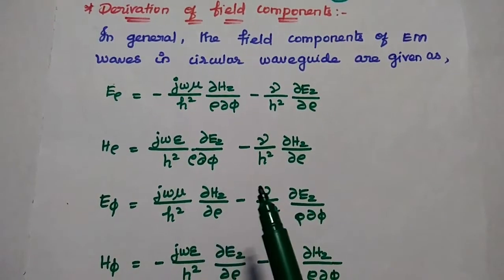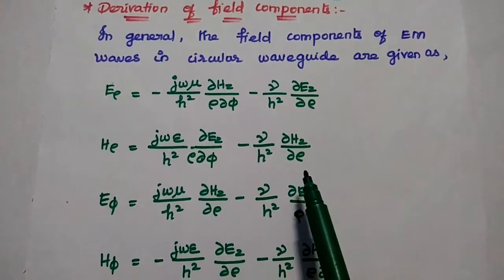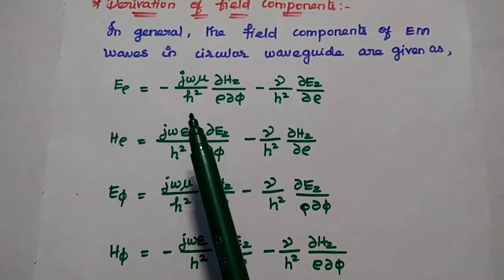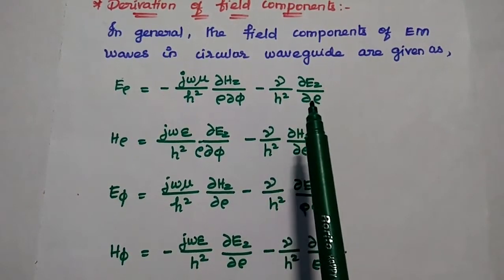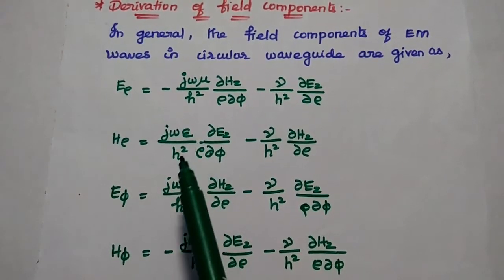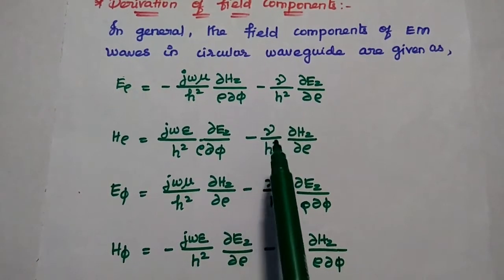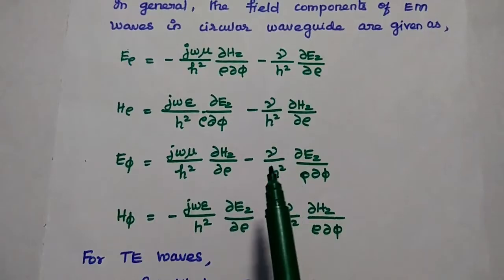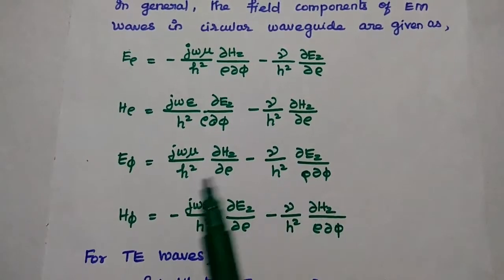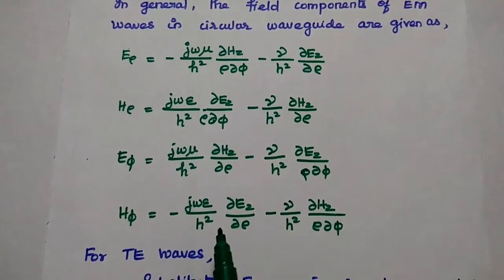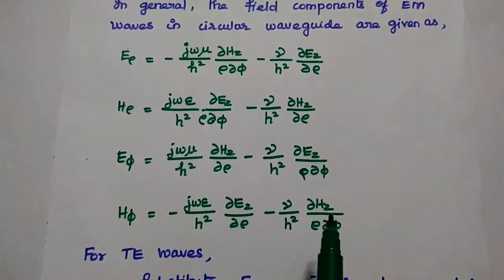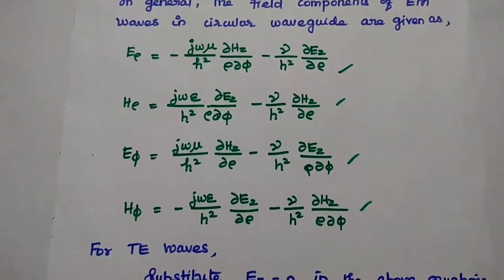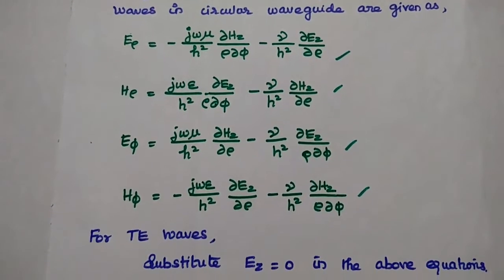The general field components of electromagnetic waves in circular waveguide are given as E_rho, H_rho, E_phi, and H_phi. Here E_rho is equal to minus j*omega*mu by H² times (dou Hz / rho dou phi) minus (gamma / H²)(dou Hz / dou rho). H_rho is equal to minus (gamma / H²)(dou Hz / dou rho). And H_phi is equal to minus (j*omega*epsilon / H²)(dou Ez / dou rho) minus (gamma / H²)(dou Hz / rho dou phi). These four equations are very important, and we are going to find the field components of TE waves using these four expressions.